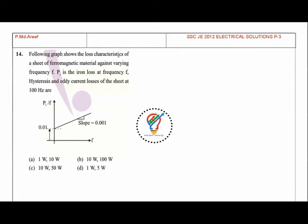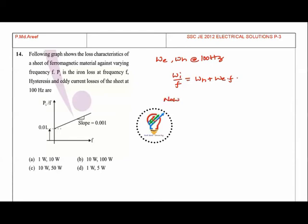The next question shows a graph of loss characteristics of a sheet of ferromagnetic material against varying frequency F. Pi is the iron losses at frequency F. We need to find the hysteresis and eddy current losses at 100 Hz. We know that iron losses divided by frequency equals hysteresis losses coefficient plus eddy current losses coefficient times F.